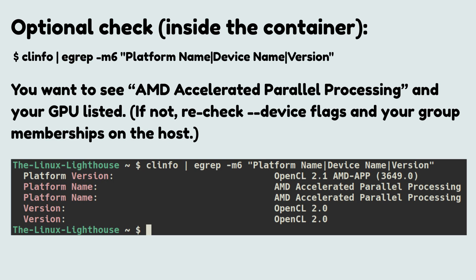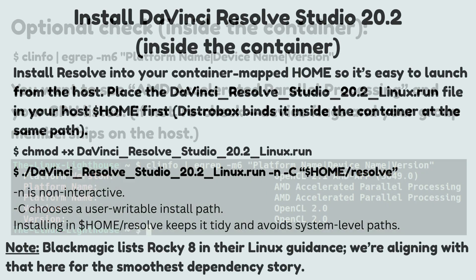Optional check: inside the container, run the clinfo command. You want to see AMD accelerated parallel processing and your GPU listed. If not, recheck the device flags and your group memberships on the host.